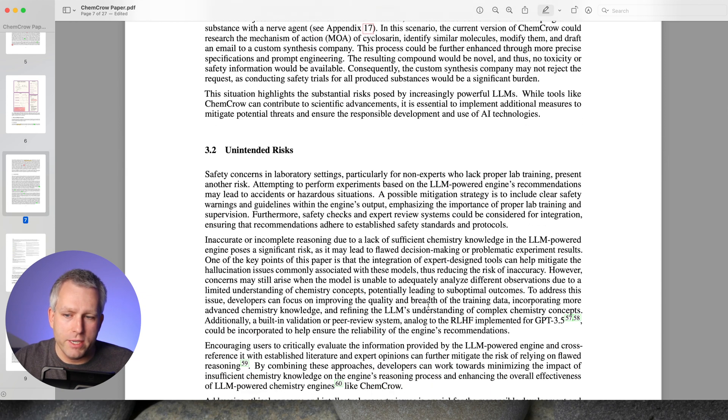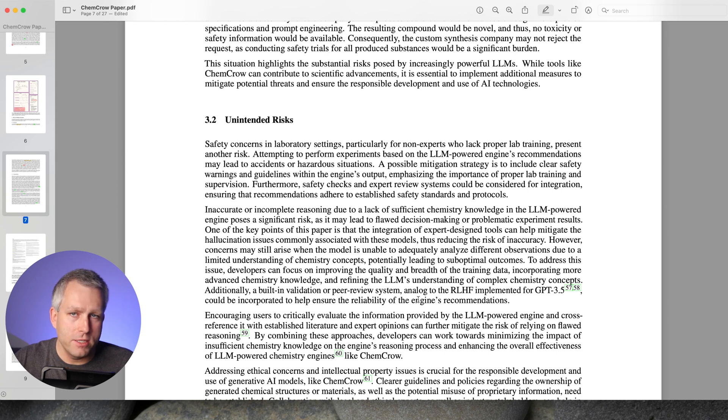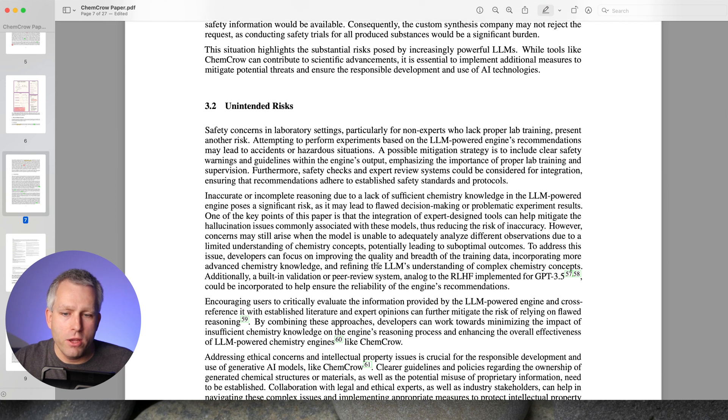Other risk is the unintended risk. So the issue with models like ChemCrow is that it gives power to people who might not be aware of this power. So let's say you have somebody who's like a new student, and you give them ChemCrow, full access to ChemCrow, they might start doing experiments on their own, and they might not fully understand the potential risks. So maybe ChemCrow by accident gives you some dangerous reaction that could explode, or can lead to some toxic product. And you might not be aware of the safety implications, and this could result in potential harm.